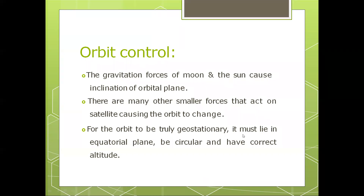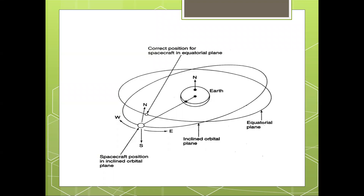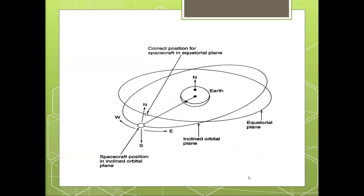To illustrate the orbital control system, this slide shows a satellite which is inclined in a particular orbit. In this figure you can see the satellite's semi-major axis, the equatorial plane, and the inclined orbital plane. The actual correct position of the satellite should be in the equatorial plane, but the satellite is positioned in the inclined plane — that is the problem generally occurring, and the orbit control system will notice this.